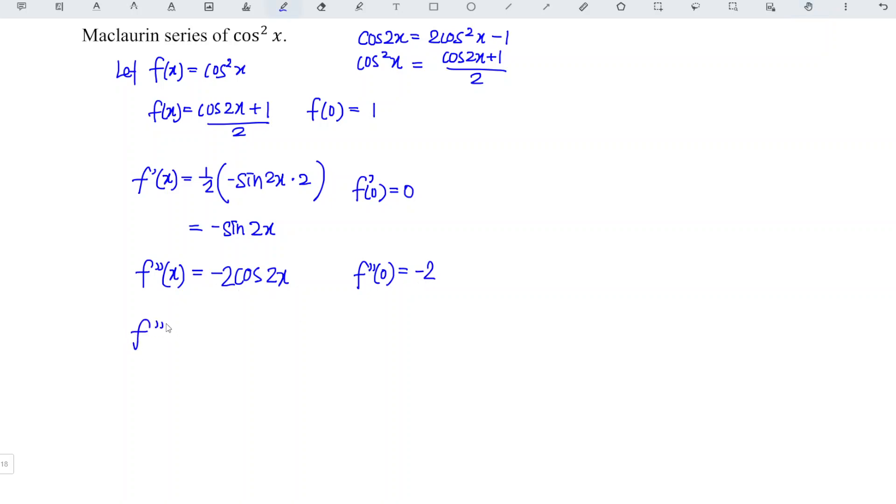Differentiate again for the third time, we should obtain negative 2 remain. Differentiating cos is negative sine. So negative, negative, positive. sine 2x. And then differentiate the inner function. 2 times 2 become 4. So which means that we should have 4 sine 2x. At the point 0, sine 0 is 0.